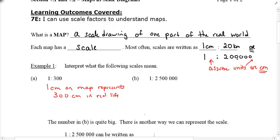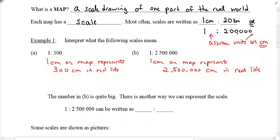And can you try the next one on your own then? You guessed it, 1 centimeter on the map represents 2,500,000 centimeters in real life. What is 2,500,000 centimeters in real life? That seems like a pretty big number. So in this case, let's see if we can convert the centimeters into a better unit. Just like what I told you before, most often scales are written as centimeters to kilometers. So let's see if we can change the centimeters to kilometers.